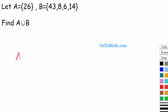So A union B is equal to, we take A and I'm gonna write 26 in here and then I'm just gonna go ahead and write the rest of them. You just join them together. 43, 8, 6, and 14. So technically this is an answer right here. However,